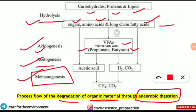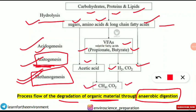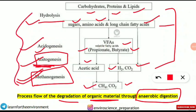The third step is acetogenesis, where acetic acid is synthesized. Along with acetic acid, hydrogen and carbon dioxide are also released. The fourth and final step is methanogenesis, where methane is produced along with carbon dioxide. You must learn this four-step sequence and what each step produces.